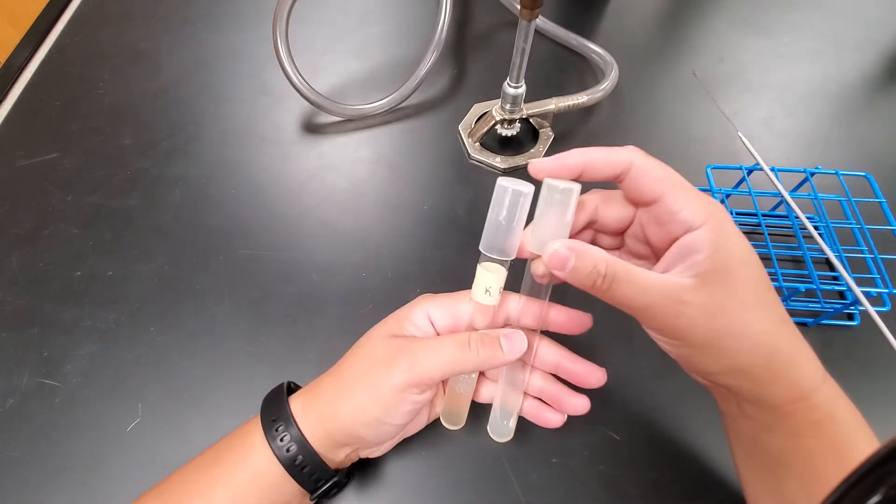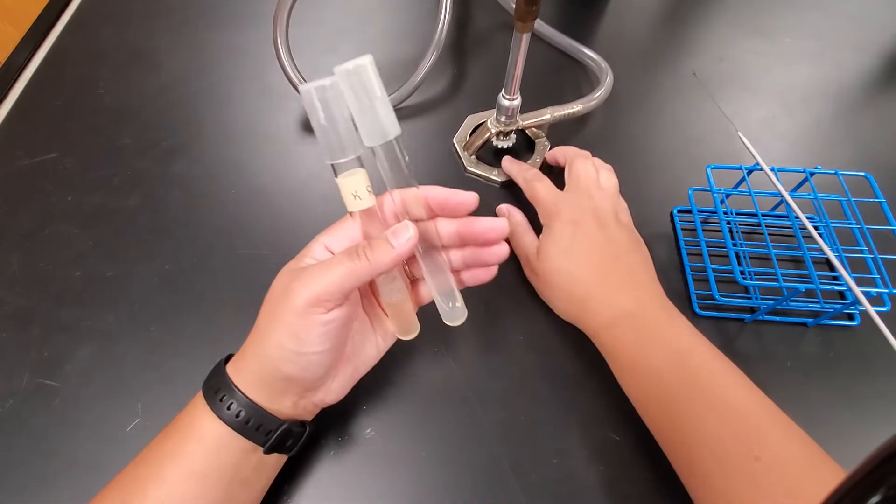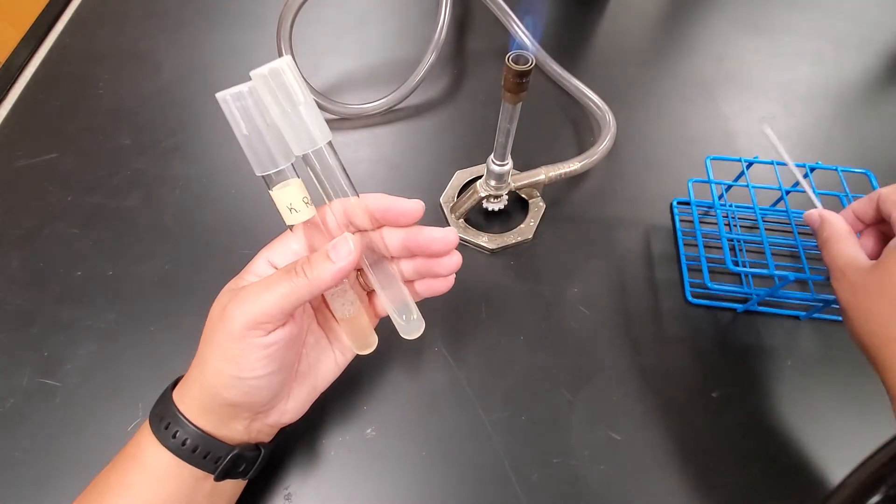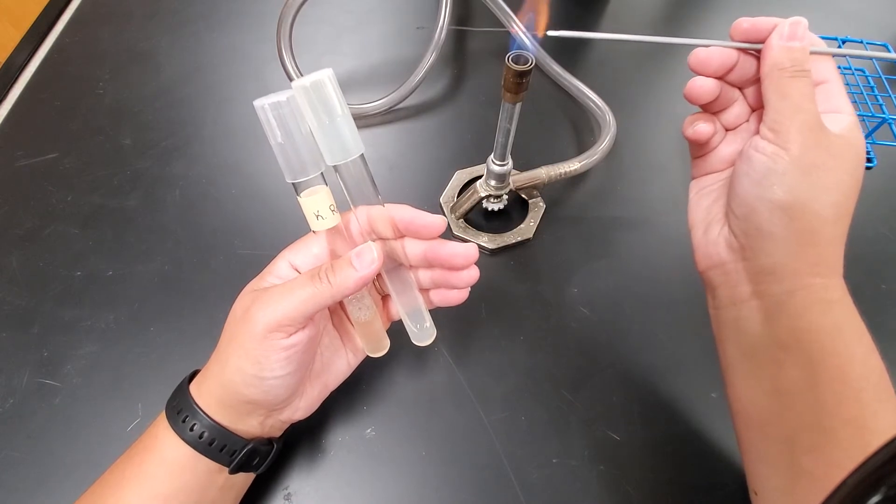So what I'm going to try to do is put my agar slant here just so you guys can see how I do this transfer. I've already got my Bunsen burner flame going. So the first thing I want to do is flame my loop.